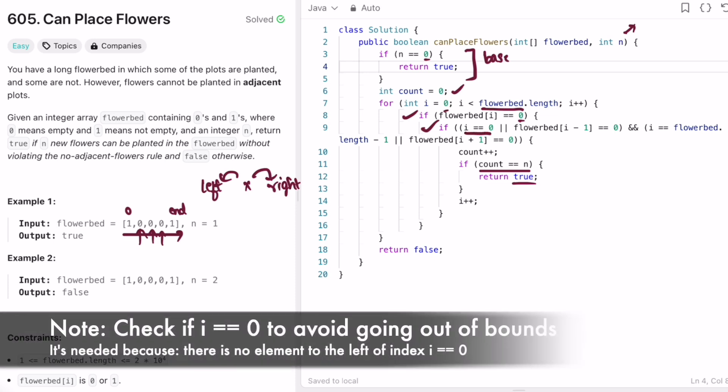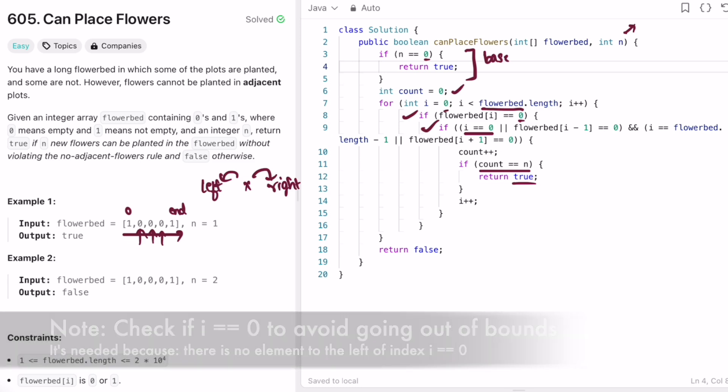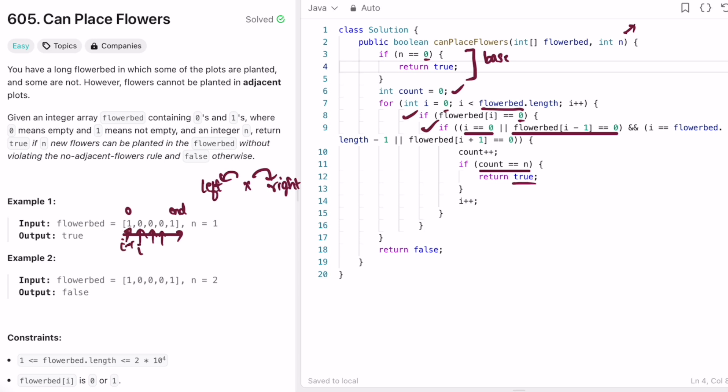So here I'm checking if it is the leftmost index, or if that element to the left, i minus one, is equal to zero. So here I'm checking the left part. And here again, AND is important because both left and right should be empty to satisfy the no adjacent flowers rule. This part is for left and this part is for right.